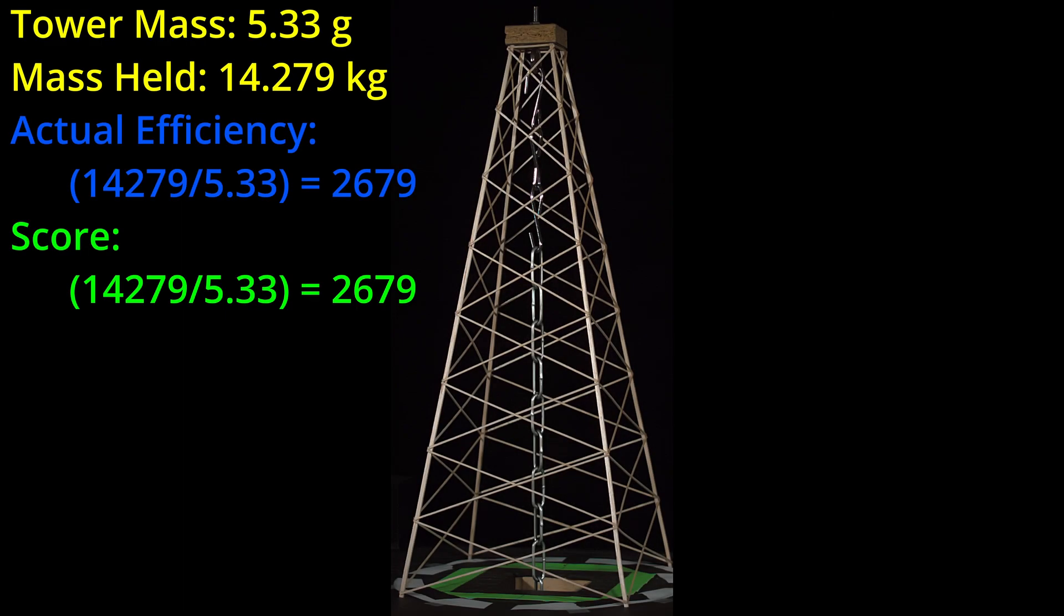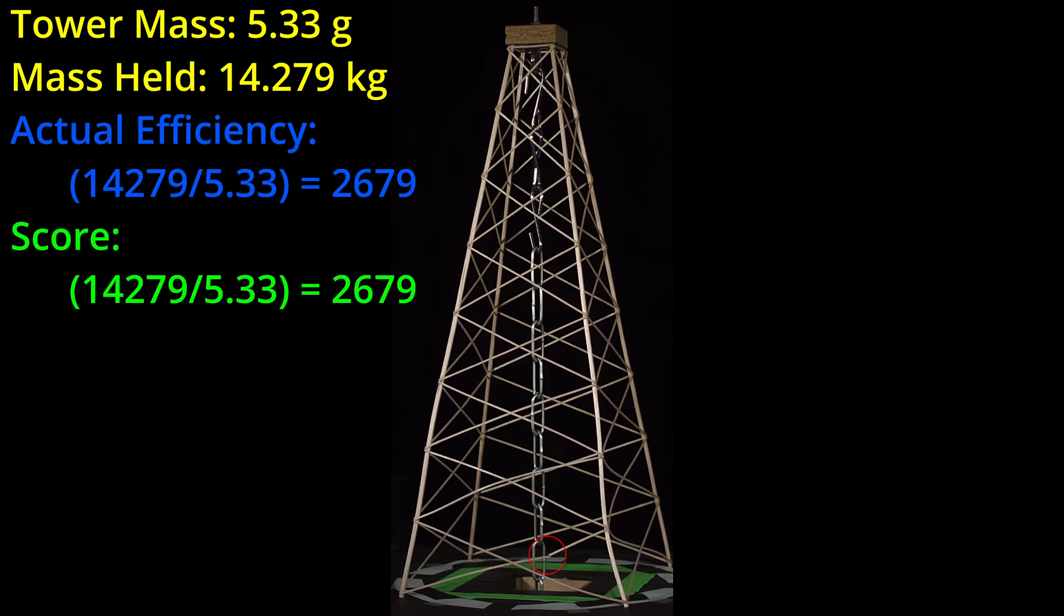So close! This tower held 14.279 kilograms or less than 5% shy of the 15 kilograms needed to collect the 5 kilogram bonus. Its actual efficiency and competition score were 2679. It looks like the first failure was in the longest crossmembers at the bottom.